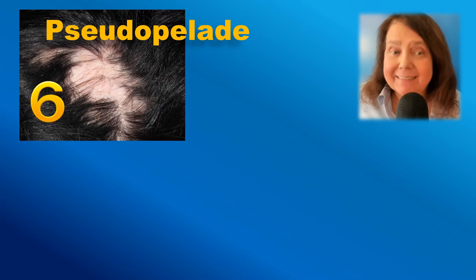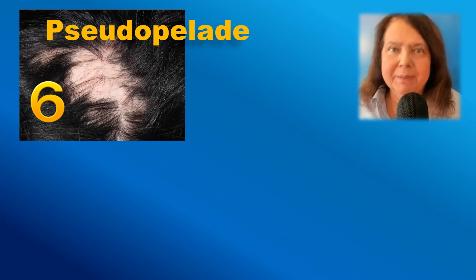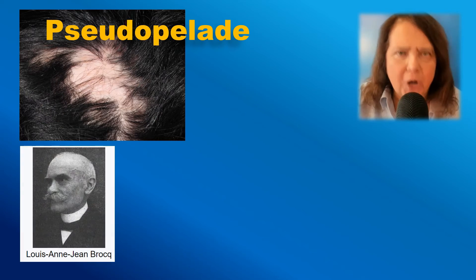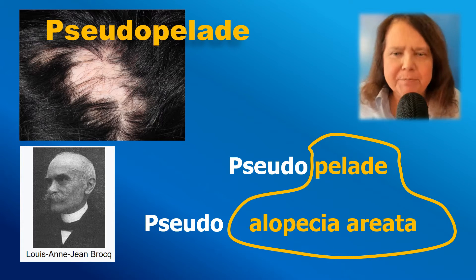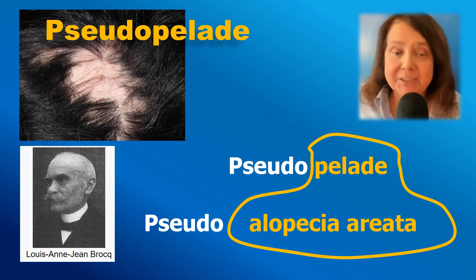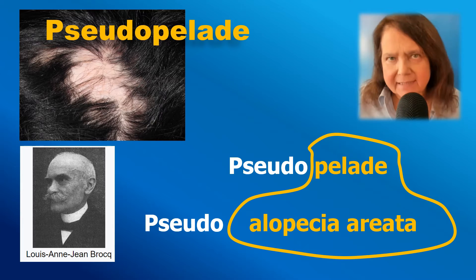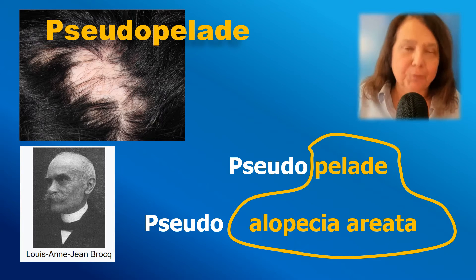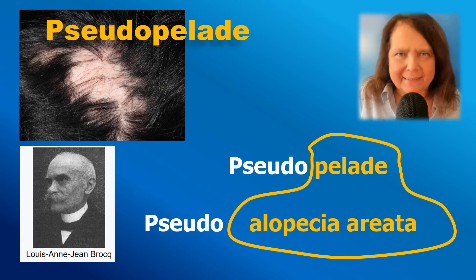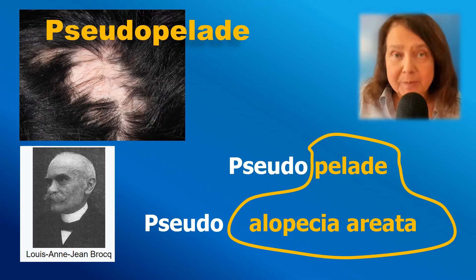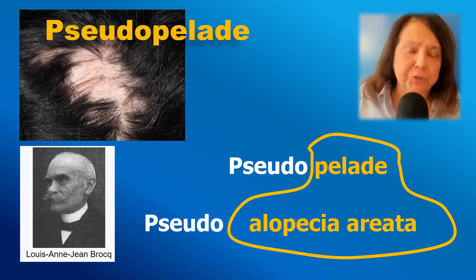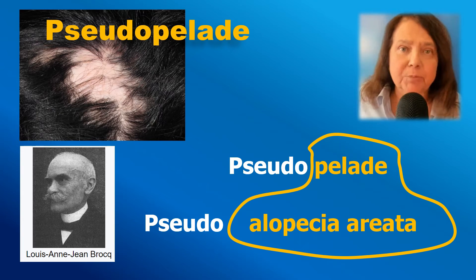Image number 6. This is an image of pseudopelade. Pseudopelade was first described by Brock. It is a French name — 'pelade' in French means alopecia areata — so it would translate directly to English as pseudo-alopecia areata. Brock saw a disease that looks like alopecia areata but is not, and this is why he gave it this name. Pseudopelade is a form of cicatricial alopecia in the spectrum of lichen planopilaris.